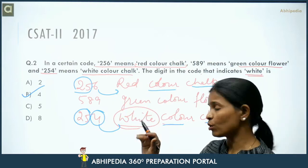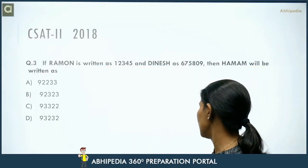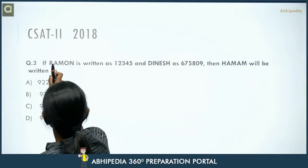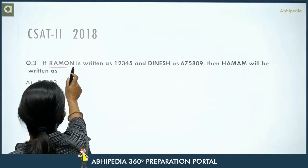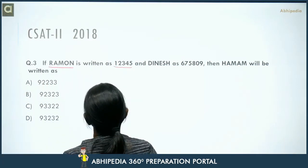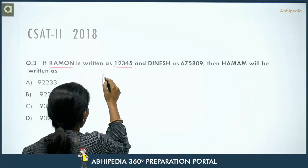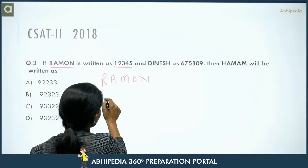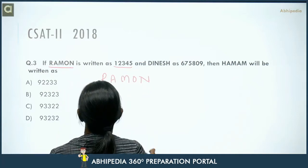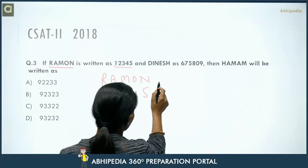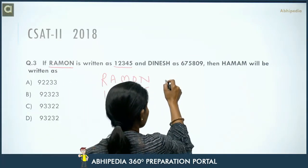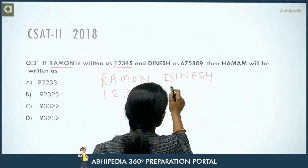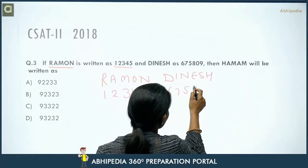Next question: if R-A-M-O-N is written as 1-2-3-4-5 and D-I-N-E-S-H is written as 6-7-5-8-0-9, then how is HAMAAM written? Each letter has a corresponding number assigned. H has code 9, A has code 2, M has code 3.